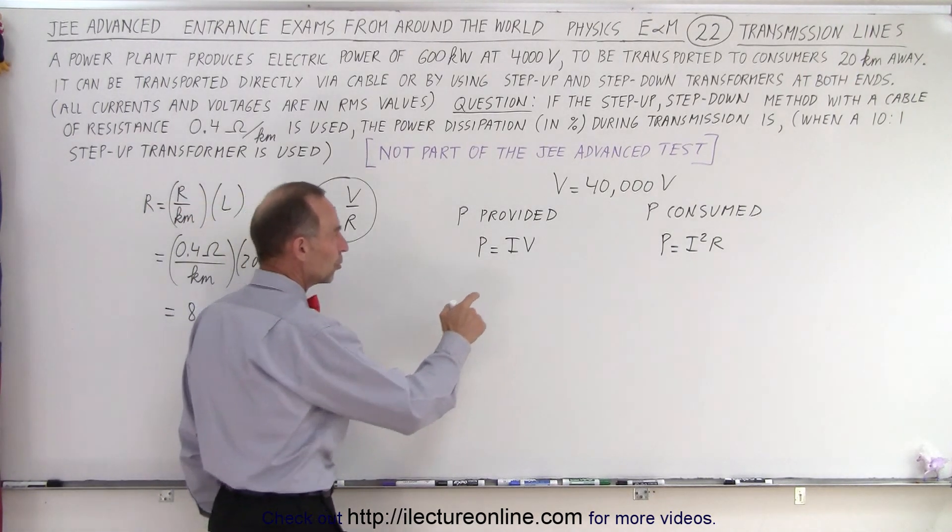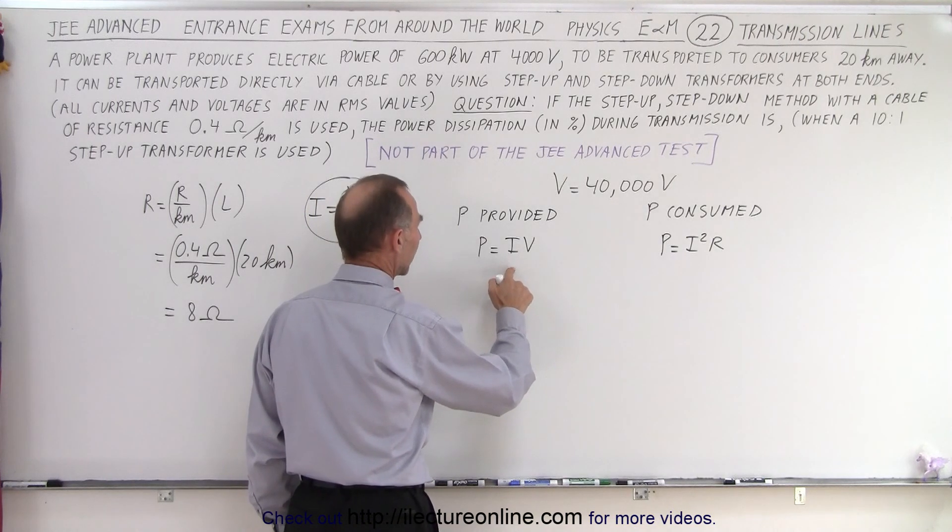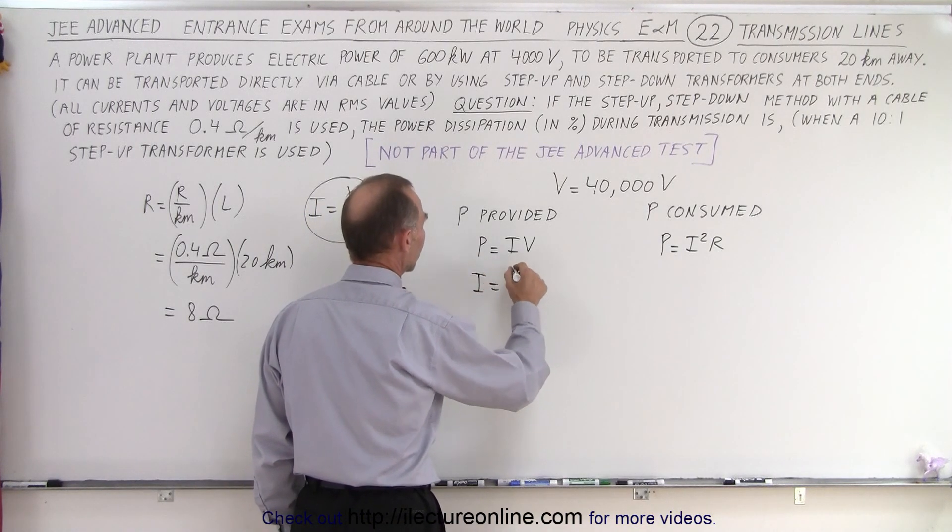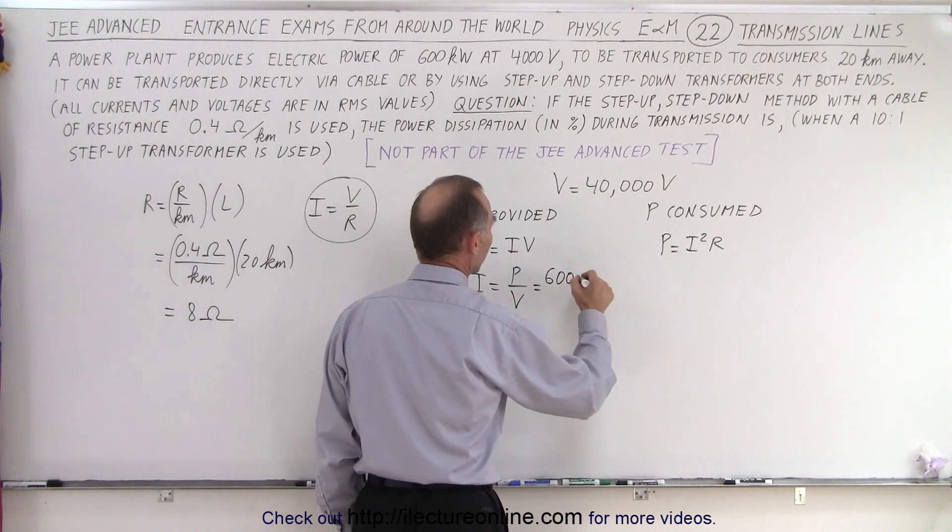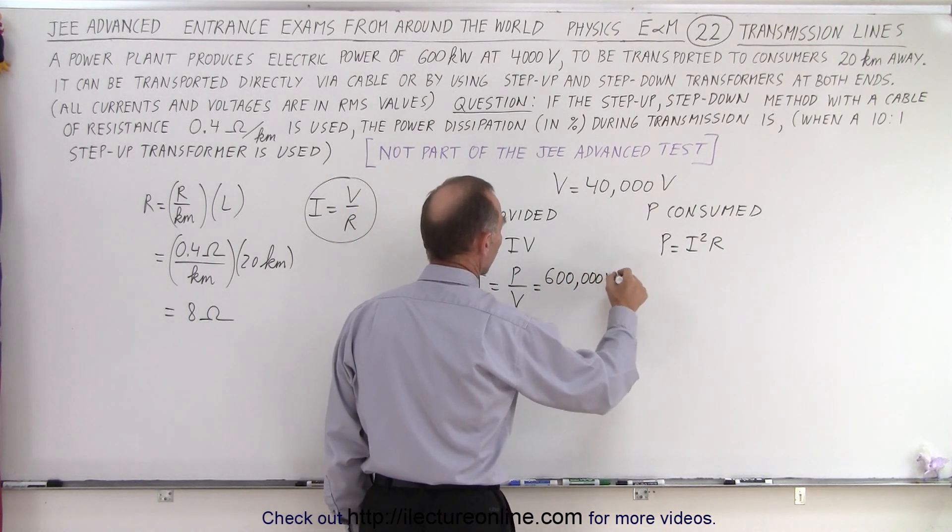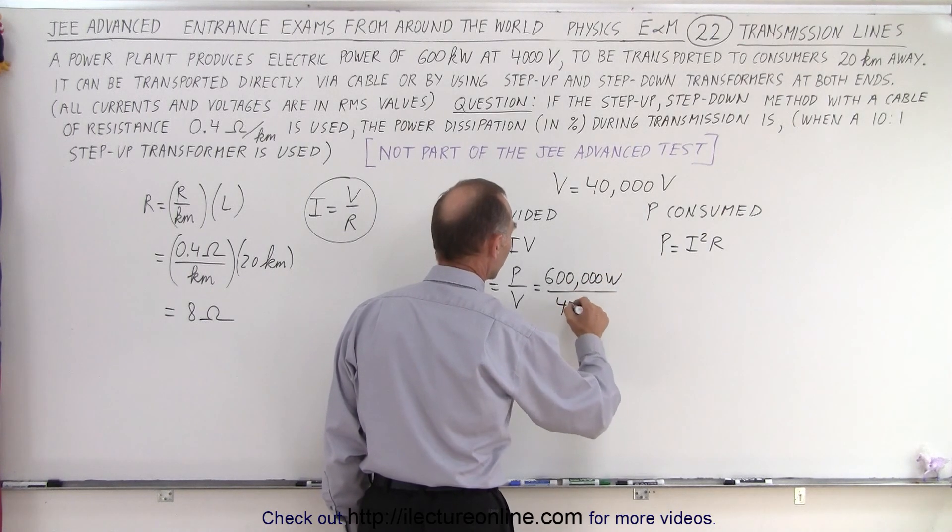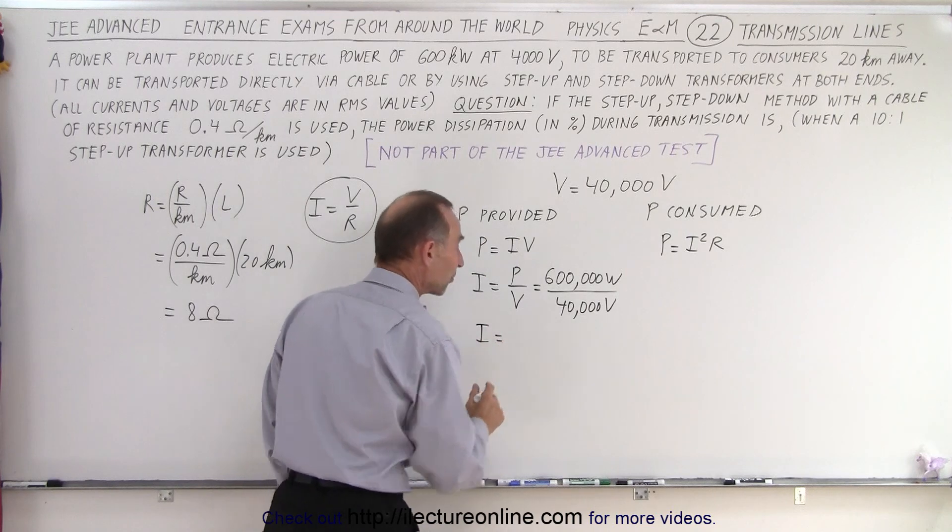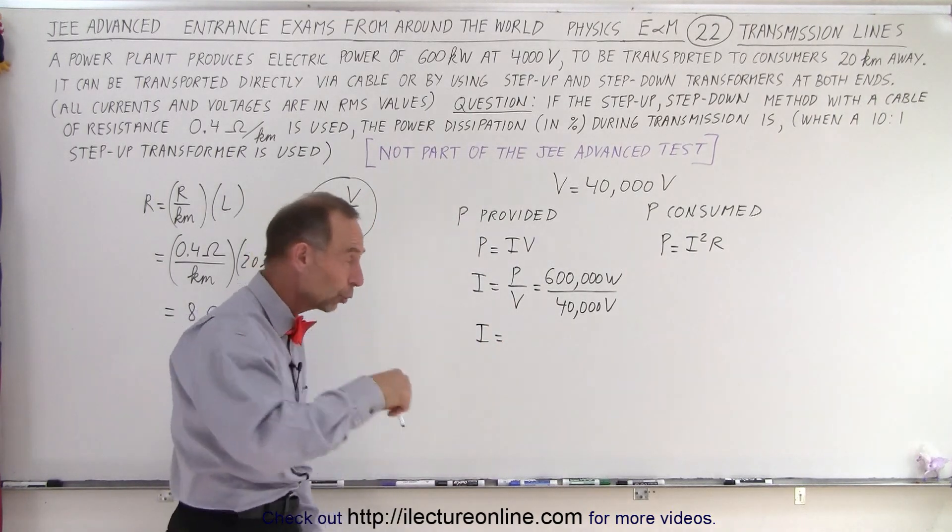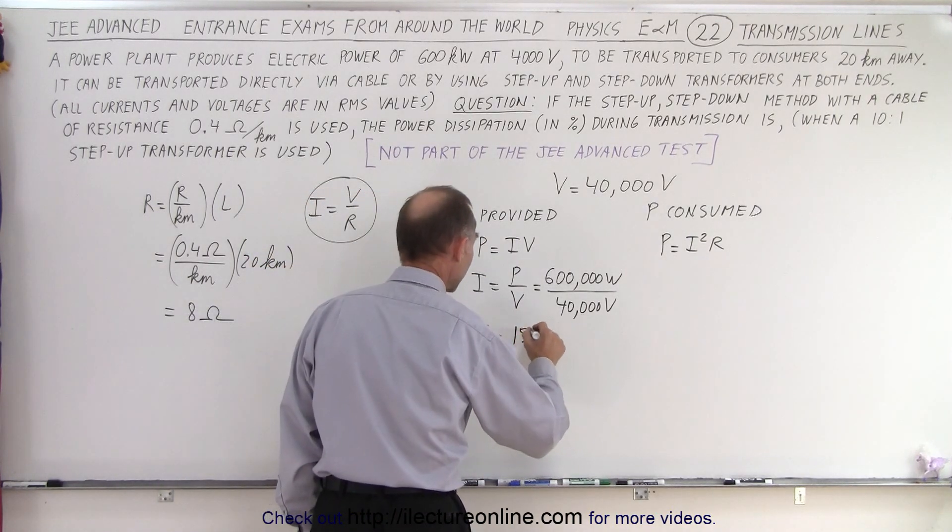So first, we're going to use the power provided to get the current again. So I is equal to P over V. Now in this case, the power is still 600,000 watts, but the voltage is now 40,000 volts, which means that the current has dropped from 150 amps all the way down to 15 amps.